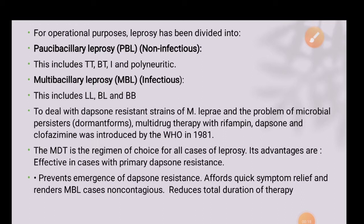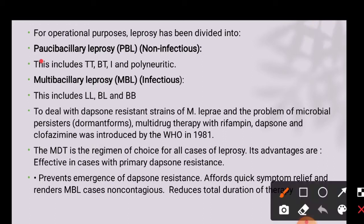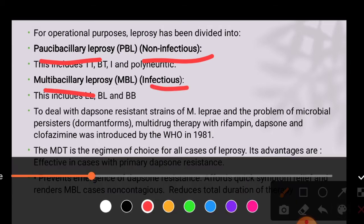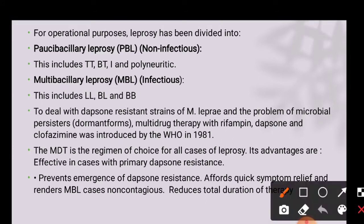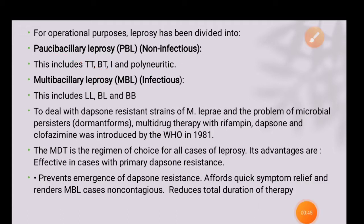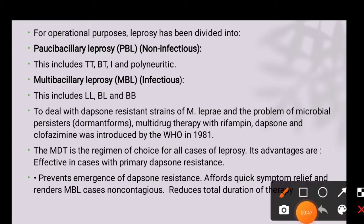For operational purposes, leprosy is divided into two further categories based on type of infection. One is paucibacillary, also known as non-infectious leprosy, and the other is multibacillary, also known as infectious leprosy. Paucibacillary leprosy includes tuberculoid leprosy, borderline leprosy, indeterminate leprosy, and polyneuritic leprosy.